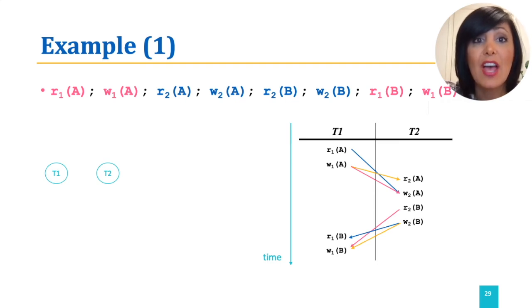We also see that there is at least one action in T2 that conflicts with an action in T1 and precedes it. So there is also an edge from T2 to T1. Therefore, the graph has a cycle, and the schedule is not conflict serializable.